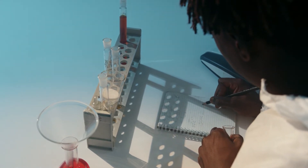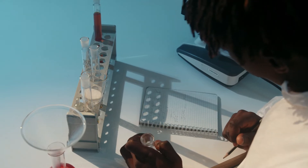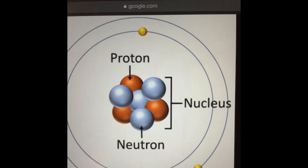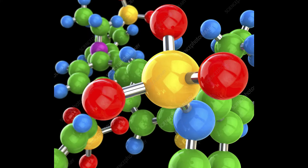Electrons are a type of subatomic particle with a negative charge. Protons are a type of subatomic particle with a positive charge. Protons are bound together in an atom's nucleus as a result of the strong nuclear force. Neutrons are a type of subatomic particle with no charge — they are neutral.